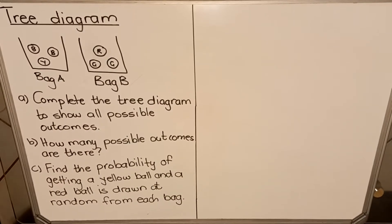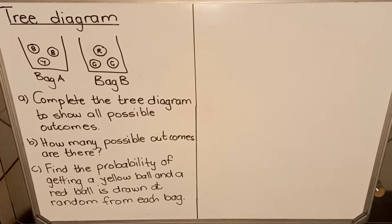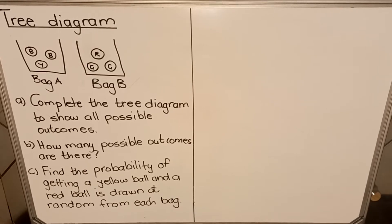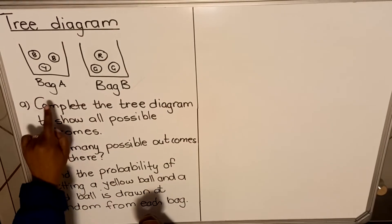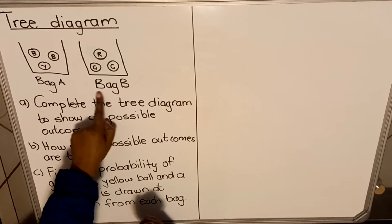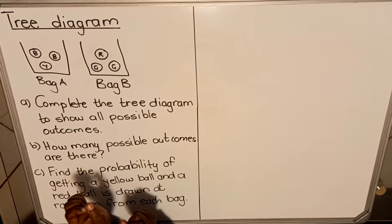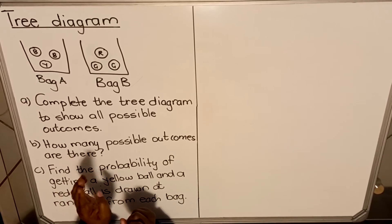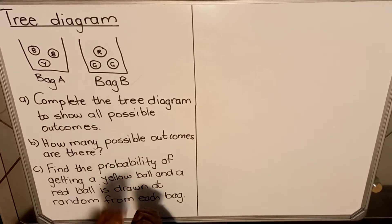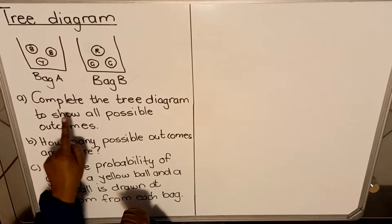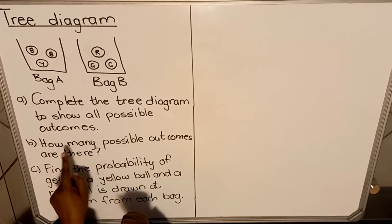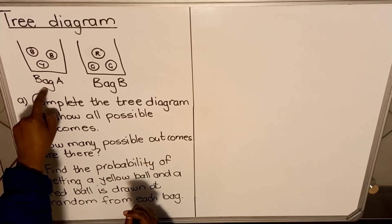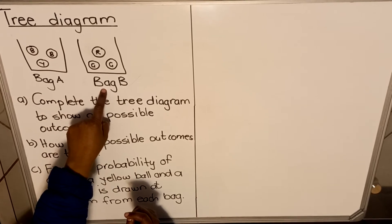Hello everyone, this is a lesson on tree diagrams. I have an example here and then I'm going to draw a tree diagram and then answer questions based on it. In this example you have two bags, Bag A and Bag B. In Bag A you have balls that are blue, blue, and yellow — two blue and one yellow. In Bag B you have two green ones and a red one. The first question says complete the tree diagram to show all possible outcomes. You will take one ball from Bag A and then take the second ball from Bag B.